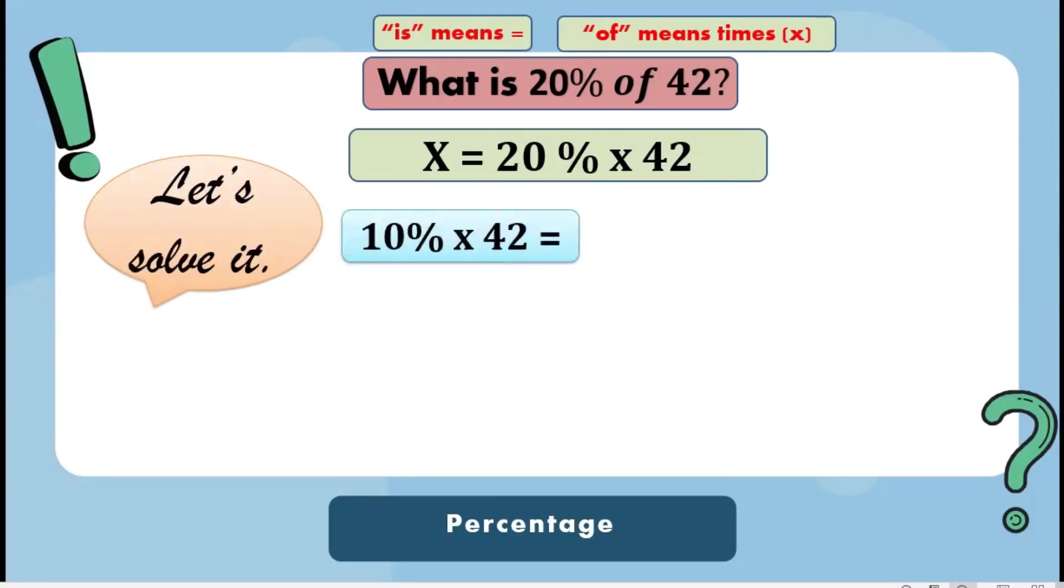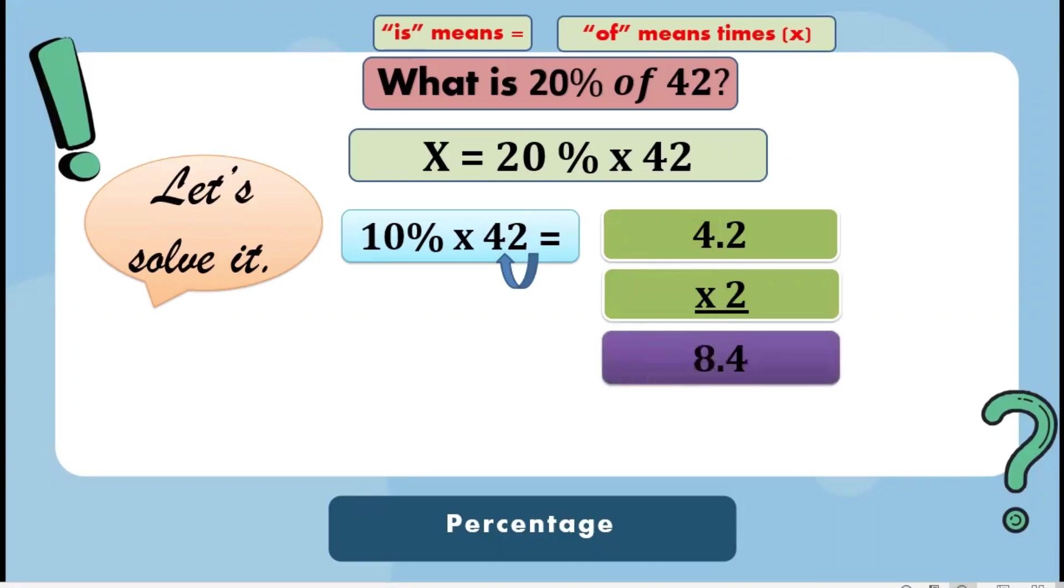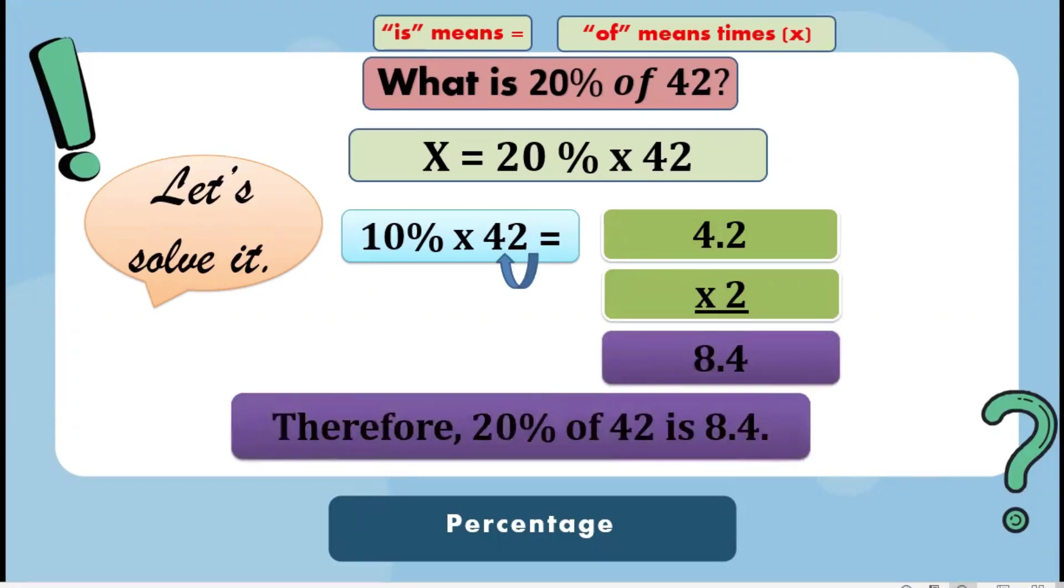To make it easier, let's get first the 10% of 42. To get the 10% of a number, divide it by 10 or just move the decimal place to the left. So the answer is 4.2. Since there are 2 10% in 20%, we will just multiply it by 2. 4.2 times 2, the answer is 8.4. Therefore, 20% of 42 is 8.4.